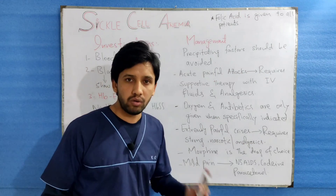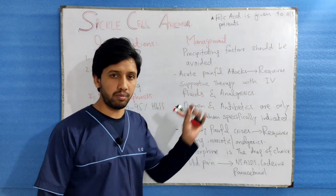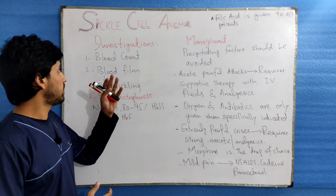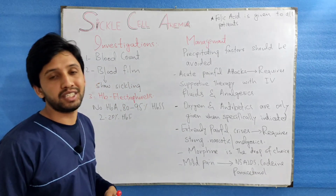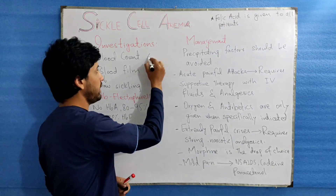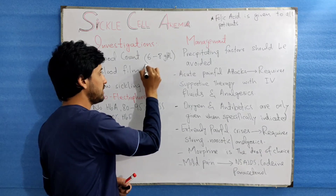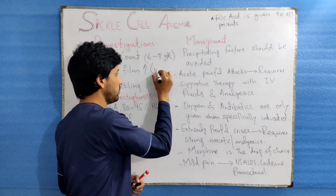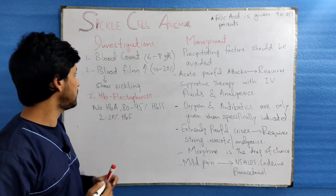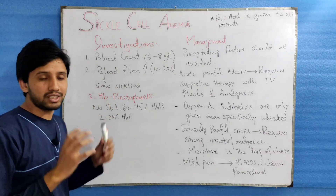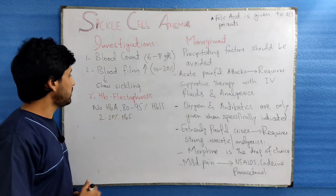Now we will discuss investigations and management. The blood count shows Hb levels ranging between 6 to 8 g/dL, with an increased reticulocyte count of 10 to 20%, which is very high in this condition. The blood film shows the sickling process, which is a feature also associated with splenomegaly.